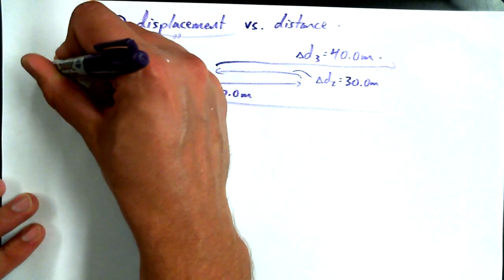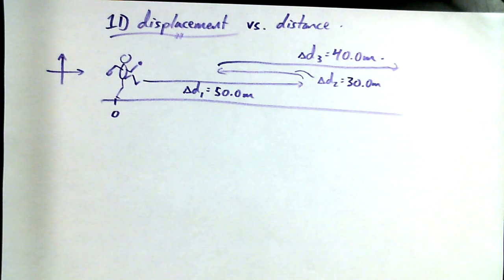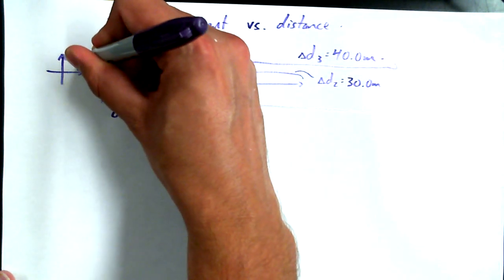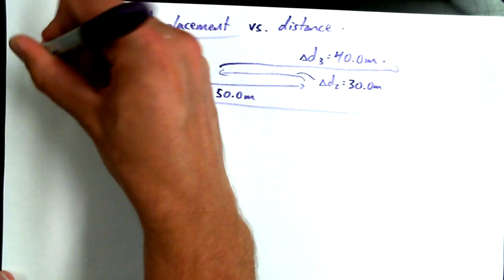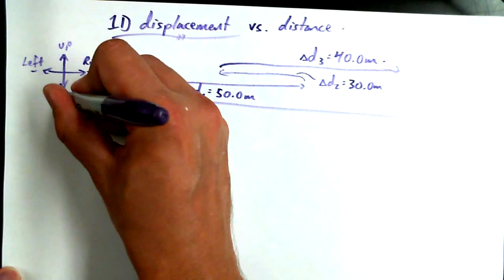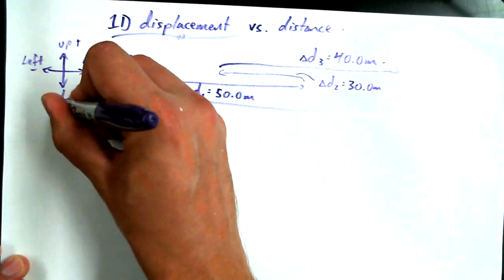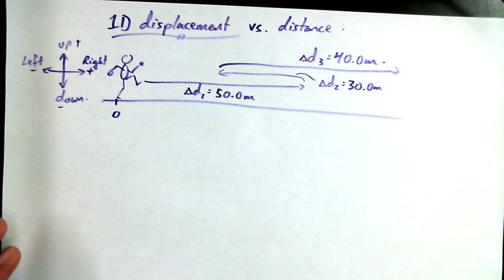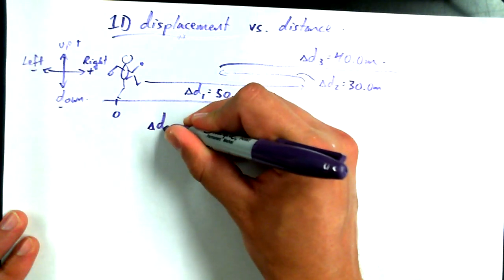50 minus 30 plus 40. What's it going to be? 60. We can do this in our heads. But we're going to go through the formal process, okay? So, we've got to define for ourselves a reference frame. We're going to call this the origin, where he starts. We're going to call to the right positive. To the left is going to be negative. Up and down directions, well, we already said it's going to be one-dimensional. So, we don't care if Timmy jumps. We're only dealing with a one-dimensional scenario here.